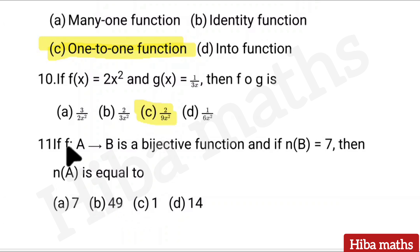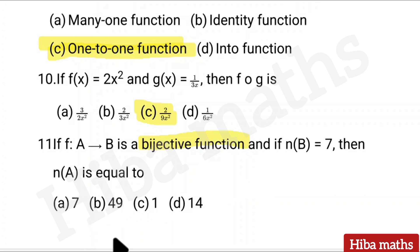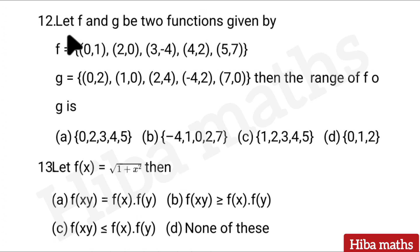Eleventh question: If A turns to B is a bijective function and n(B) is equal to 7, then n(A) is equal to — recall the property of bijective functions. Answer: option A.